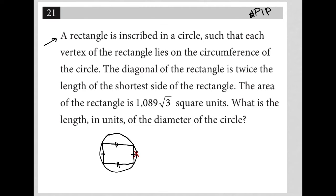Okay, so if I call the shortest side of the rectangle side x, then that means that my diagonal is 2x. It's 2 times the length of the shortest side of the rectangle. The next sentence says the area of the rectangle is 1089 square root 3.